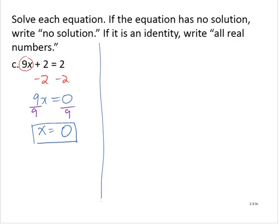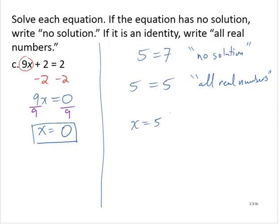So we have to kind of be careful here. If we have a situation where we get in the end, say 5 equals 7, what that tells us is we have no solution. If we have on both sides of the equal sign the exact same thing, so if I ended up with 5 equals 5, that tells me the solution is all real numbers. But if in the end I find, say, x equals 5, then that is the only solution.